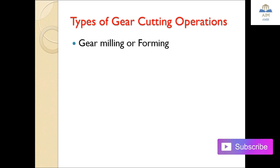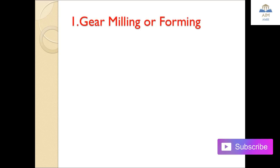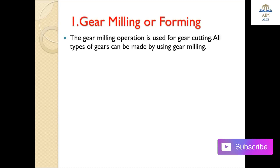The types of gear cutting operations are: gear milling or forming, gear shaping, gear hobbing, and gear finishing. In gear milling, the operation is used for gear cutting and all types of gears can be made using gear milling.